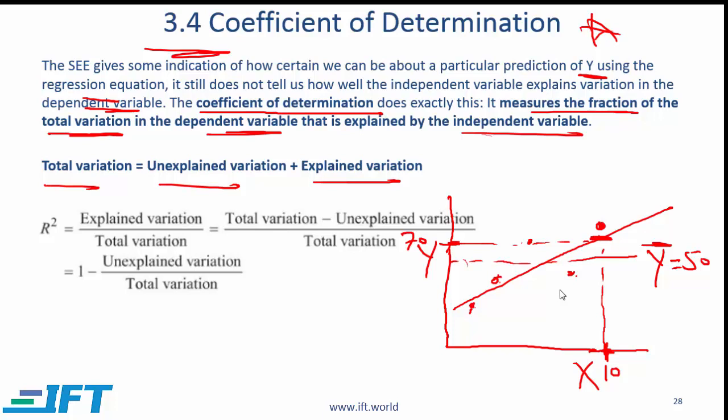When we talk about total variation, the total variation refers to the difference between the actual value of y and the average value. Let's say that the actual value of y is 75.